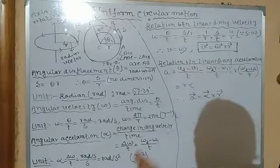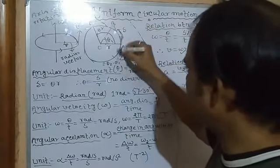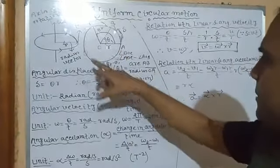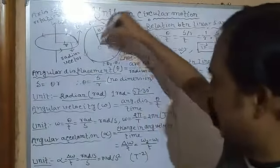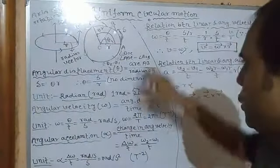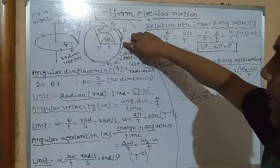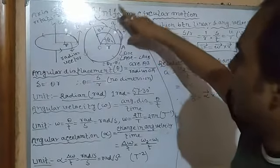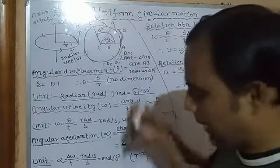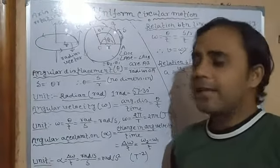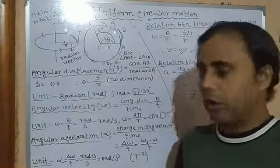First, we will try to understand angular displacement. When a particle moves — suppose the motion takes place in the anti-clockwise direction — you may take the example of the blade of a fan or the arc. Initially when T equals zero, the particle was at position A. After some time it travels to point B, creating some arc. Both these points A and B create some angle at the center, which is called theta. This is called angular displacement — the angle subtended by the initial and the final position of the particle at the center of the circle.